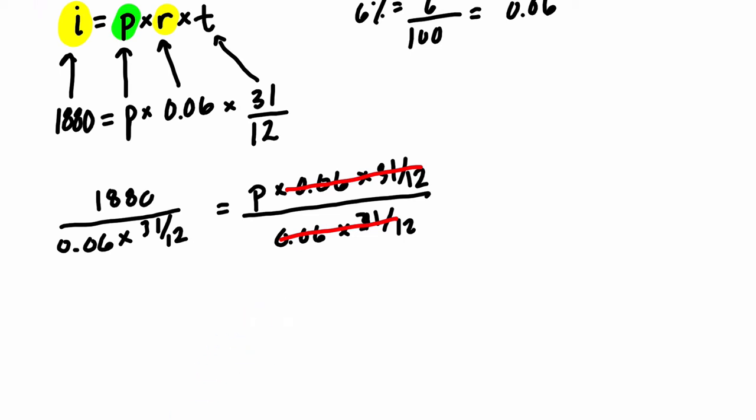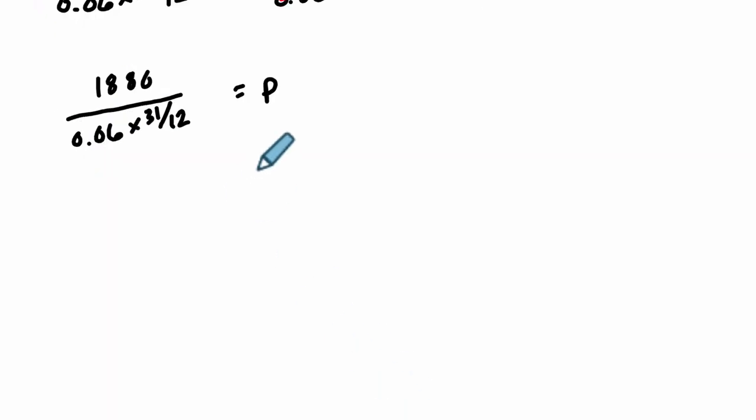Now, if you knew you were doing this, you could just kind of write out that p equals this ratio right here. Because what's going to always happen on this side is these two things are going to divide to 1. They're equal. Whatever that product is, they're the same thing. And by dividing by it, that cancels out to 1. So you could just basically skip to this step right here. p equals, it's going to equal this ratio. 1880 over 0.06 times 31 over 12. And this will be our principle.